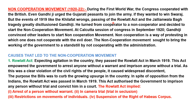But the events of 1919 — like the Khilafat wrongs, the passing of the Rowlatt Act, and the Jallianwala Bagh tragedy — greatly disillusioned Gandhiji, destroying his belief. Seeing these three incidents, Gandhiji thought that India would not get freedom, so he turned from cooperator to non-cooperator and decided to start the non-cooperation movement.